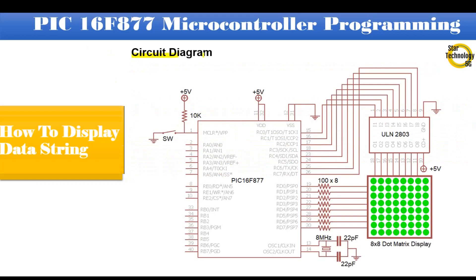Here is the circuit diagram we are using in our project. It is the PIC16F877 microcontroller. Pin number 1 is master reset — if we press the switch it will reset the microcontroller. Port C is interfaced with the dot matrix display's rows through ULN2803 IC because the microcontroller cannot provide enough current for operating 64 LEDs. Port D is interfaced with the dot matrix display's columns through current limiting resistors of 100 ohm. Pin numbers 13 and 14 are interfaced with an 8 MHz crystal and 22 pF capacitors. Pin numbers 11 and 32 are connected with positive 5 volts; pin numbers 12 and 31 are connected with ground.